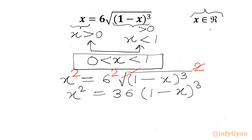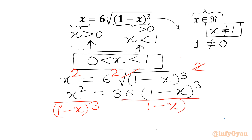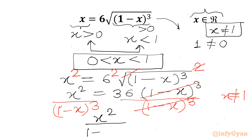If we check at x equals 1, the LHS will be 1 and the RHS will be 0. Since 1 is not equal to 0, we can say x cannot be 1 for our equation. So we can divide both sides by (1 minus x) cubed, since x is not equal to 1. Cancelling (1 minus x) cubed from numerator and denominator, the equation becomes x squared over (1 minus x) cubed equals 36.